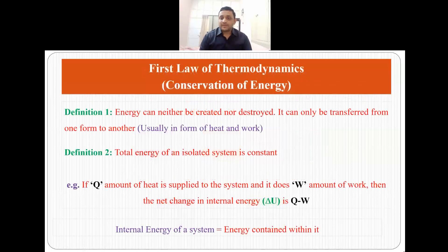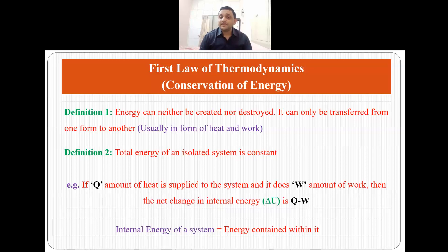The first law of thermodynamics is based on conservation of energy. It states that energy can neither be created nor destroyed. It can only be transferred from one form to another and usually this transfer is either in the form of heat or in the form of work. The other definition states that total energy of an isolated system is always constant.